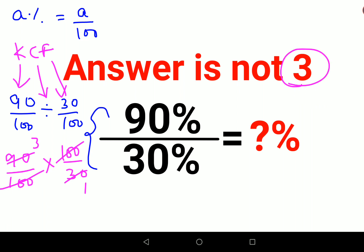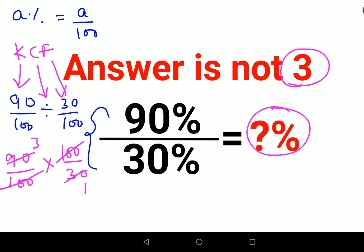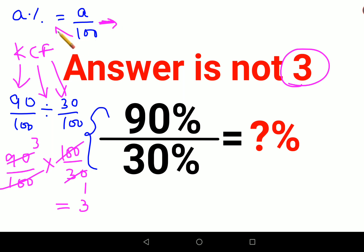The reason for that is because they want the answer in terms of percentage. If the percentage sign had not been mentioned, your answer of 3 would have been absolutely correct. But since a percentage sign is involved, and to convert a number into a percentage you need to multiply by 100, the answer comes out to be 300%.